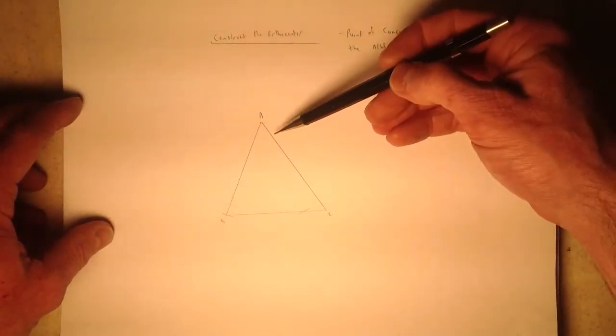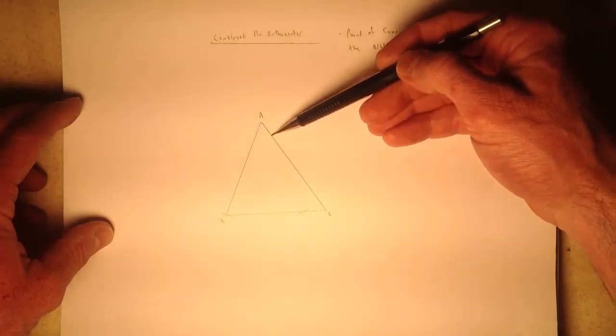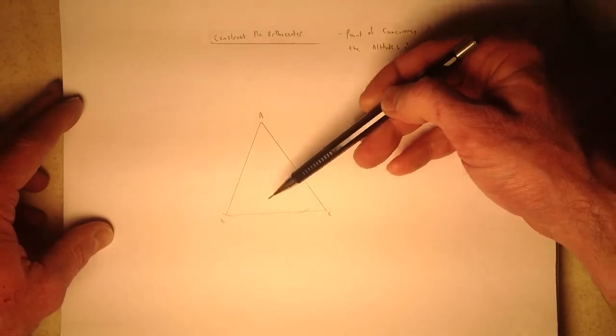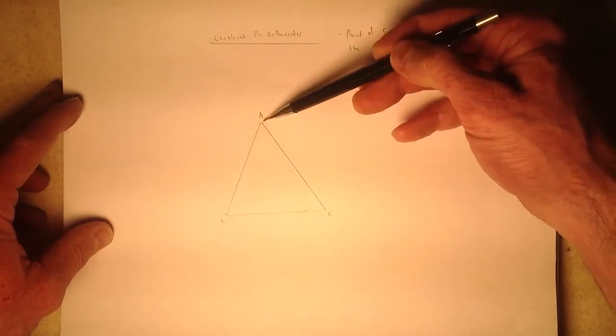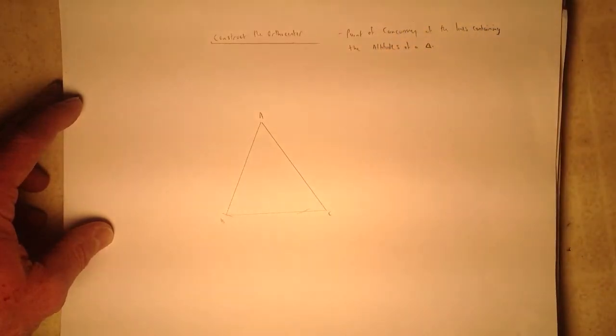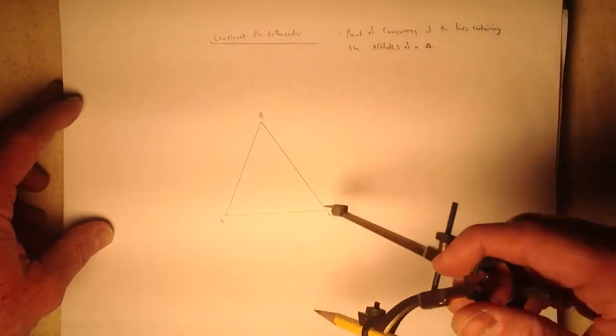Notice that as I do that, it has nothing to do with these two sides here. These two sides are irrelevant when I'm trying to construct a line perpendicular to BC that passes through A. I'm only focusing on A and this side down here, BC.